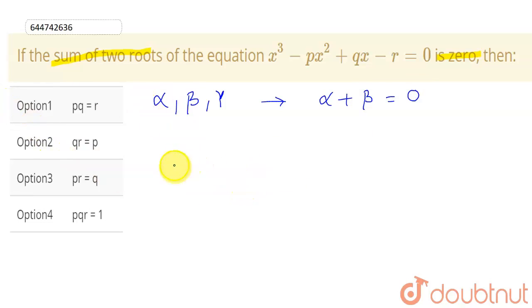As we know that sum of the roots, which is alpha plus beta plus gamma, is equal to minus the coefficient of x square divided by coefficient of x cube in case of cubic equation. So coefficient of x square is minus p here, divided by coefficient of x cube which is one.